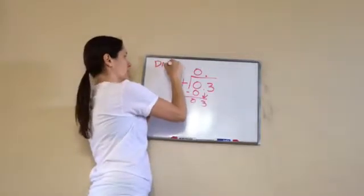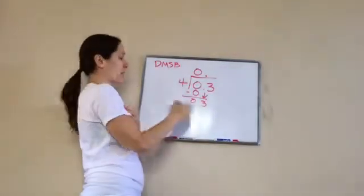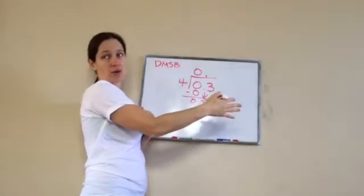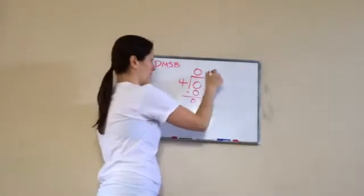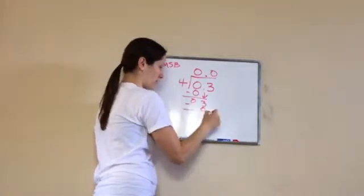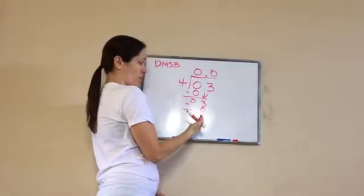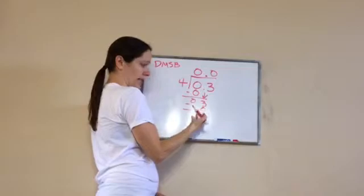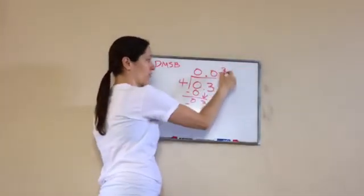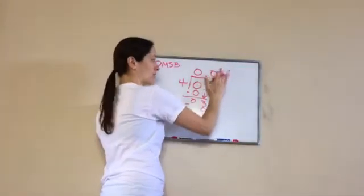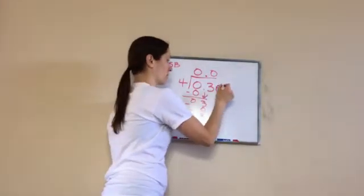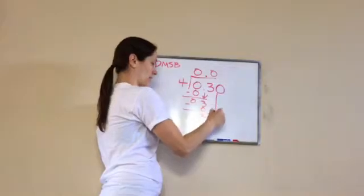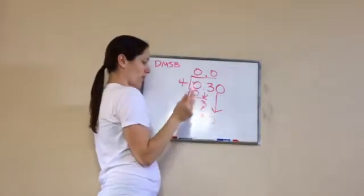Four goes into three, zero times. Zero times four is zero. Now we're done. There's nothing else to bring down yet. I can't do three-fourths right here and I can't put remainder three right here. So what do I have to do? Add a zero. At that point, so we bring it down. Four goes into 30 seven times. Seven times four is 28.